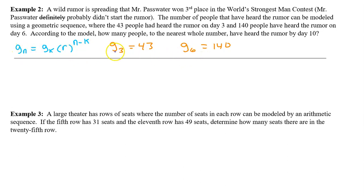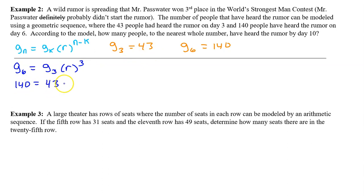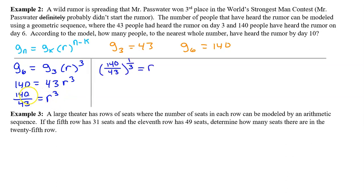We can use these two terms to find the common ratio r. Let's put G6 in for Gn and G3 in for Gk — always let the larger index term be Gn. n minus k will be 6 minus 3, which is 3. G6 is 140, so we have 140 equals 43 times r to the third power. Dividing both sides by 43, we get 140 over 43 equals r to the third power. To isolate r, we raise both sides to the one-third power — since r cubed to the one-third equals r. So r equals 140 over 43 to the one-third power. We have found the common ratio.